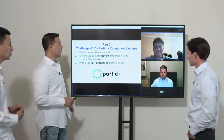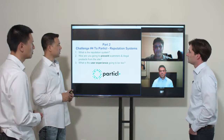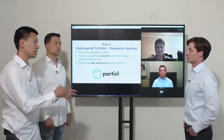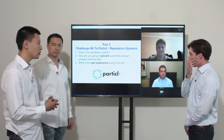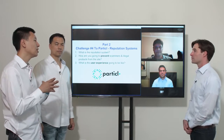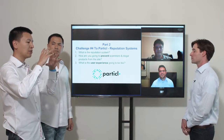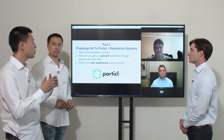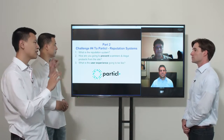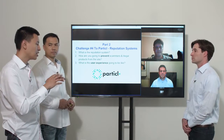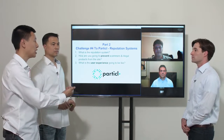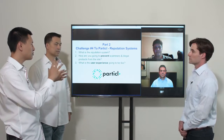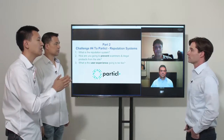The fourth challenge is reputation systems. We're all familiar with eBay, Amazon, Uber, and Airbnb — these peer-to-peer reputation systems where customers review each other and build up reputation. What type of reputation system does Particle have, and what are the challenges? The reputation system is a big part of consumer protection to make sure you get what was advertised, and to weed out scammers and illegal products.